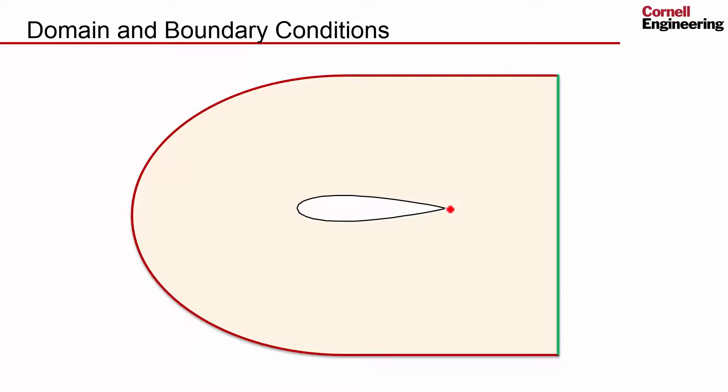And at the region of the outer boundary that's highlighted in red, I'm going to impose the free stream conditions. So at the free stream, the velocity is V_infinity and it's coming in at an angle alpha. And from that I can calculate the U and V components of the velocity.